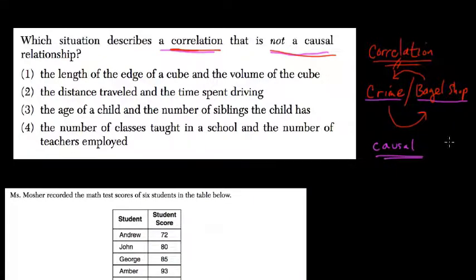Causal means one thing causes the other. So I noticed that choice one is gone, because the edge of a cube, or the side length of a cube, does affect the volume directly. That's causal. Two is out, because the time spent driving does affect how far you've traveled.